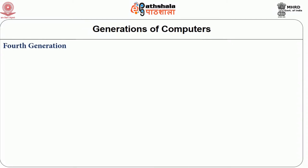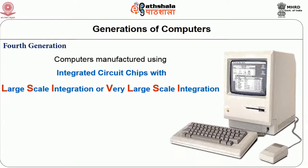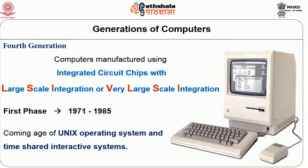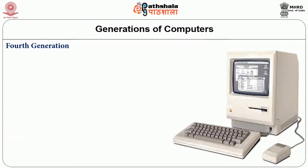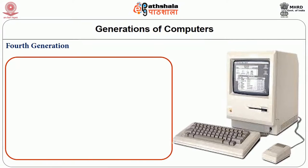Fourth generation computers use a microprocessor designed with integrated chips having large quantities of circuits. With large scale integration (LSI) or very large scale integration (VLSI), computers manufactured using LSI and VLSI circuits are known as fourth generation computers. The first phase was between 1971 and 1985, which saw the advent of the UNIX operating system and time-shared interactive systems. These systems became user friendly and highly reliable, and the effective cost of computing came down.